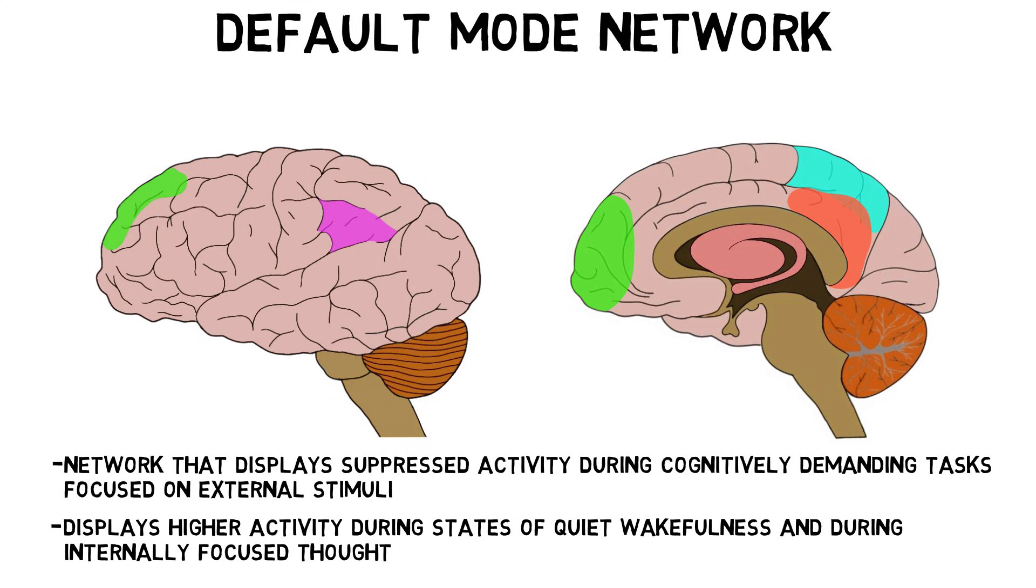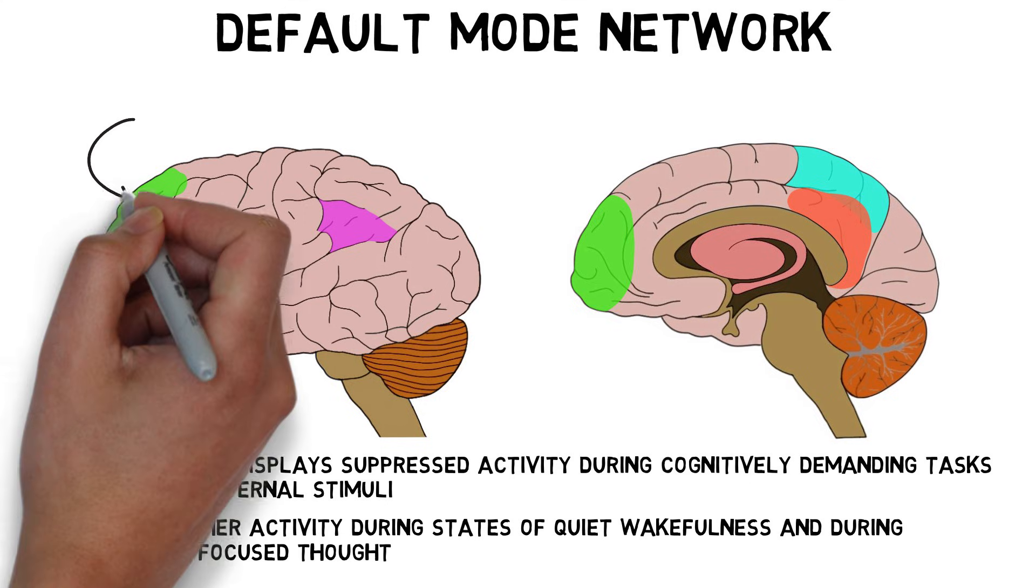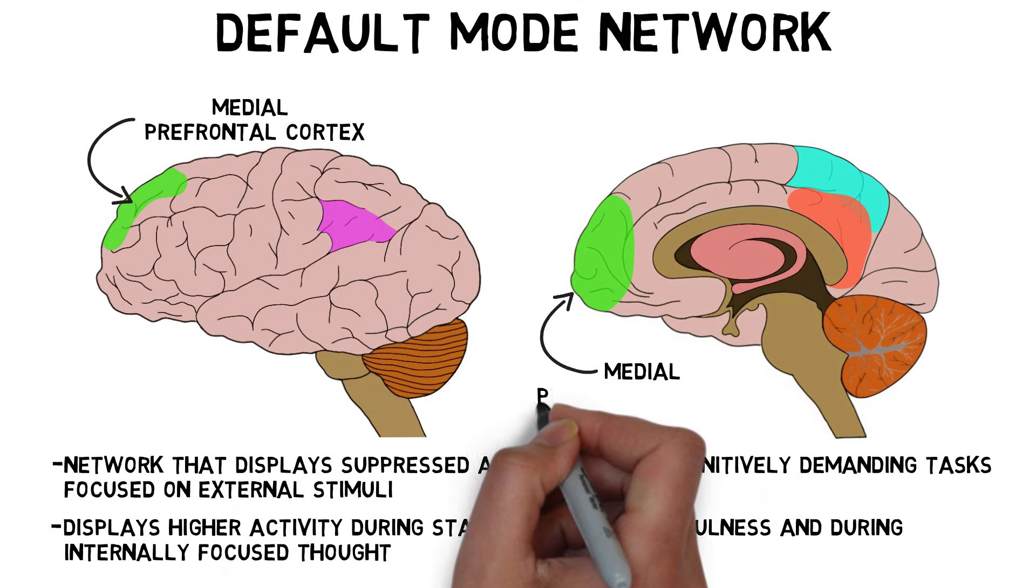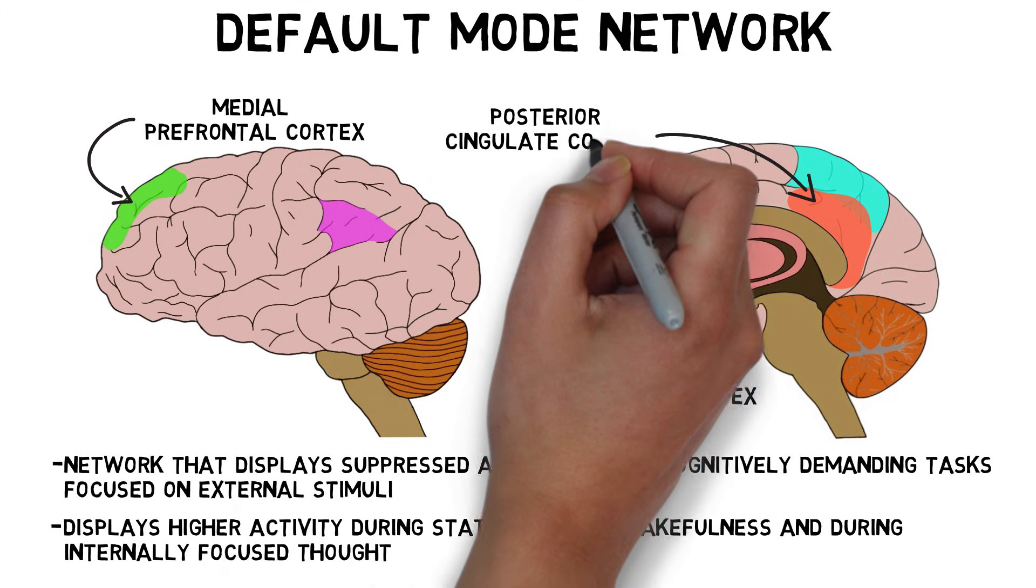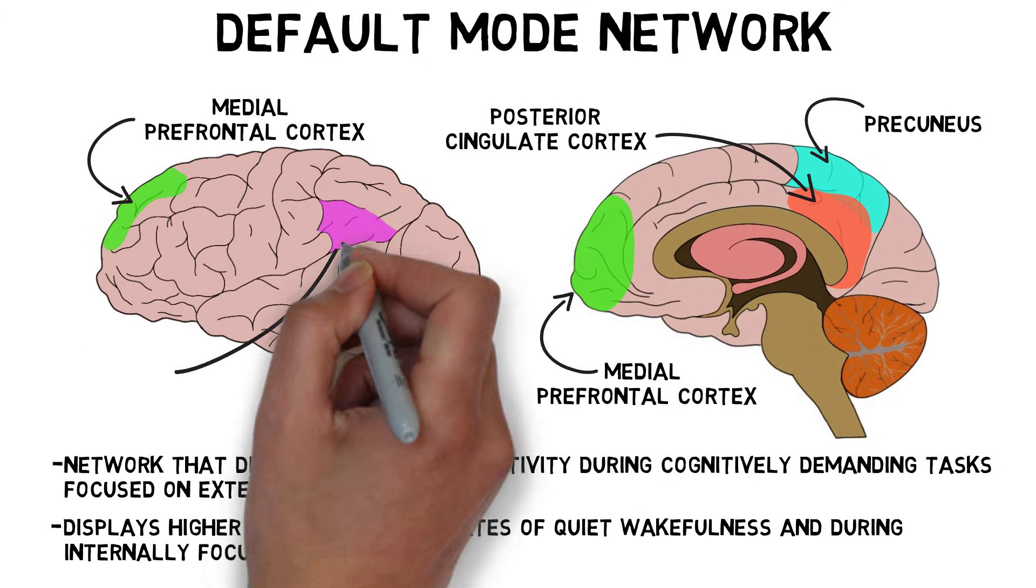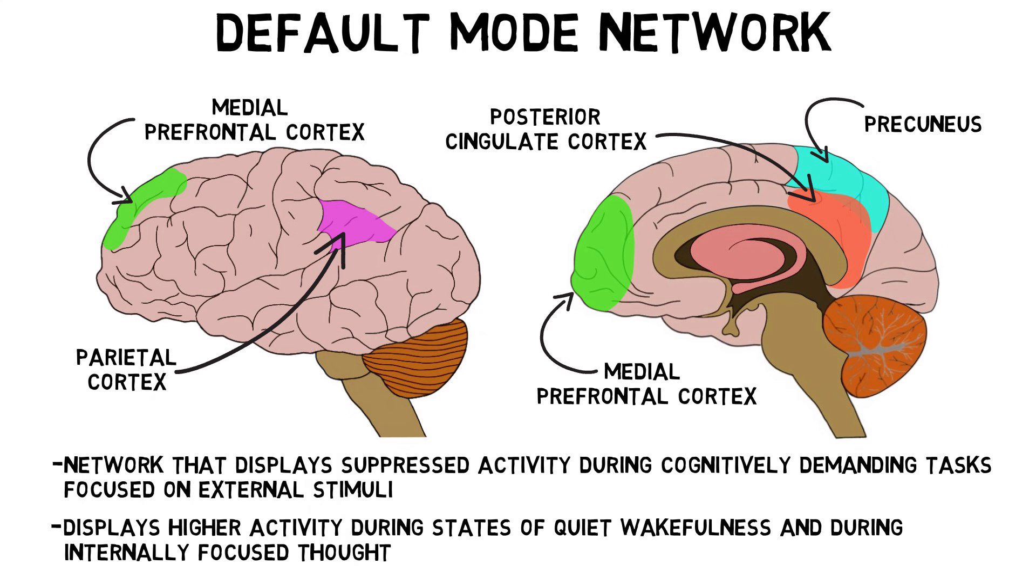There is no consensus on what structures make up the default mode network, but it's thought to include regions in the medial prefrontal cortex, posterior cingulate cortex, precuneus, and lateral parietal cortex as well as other structures.